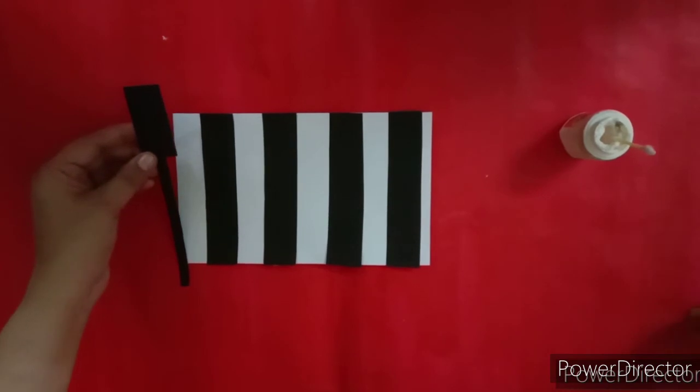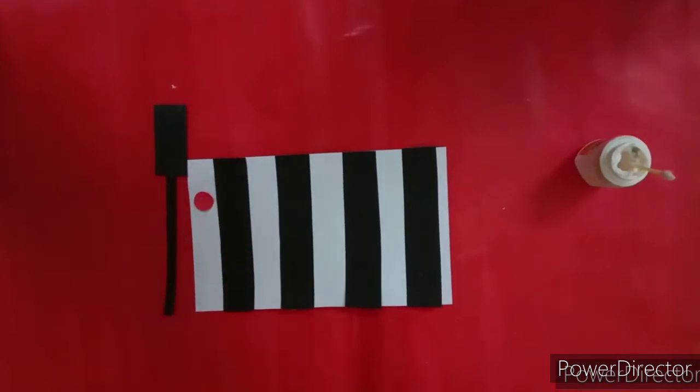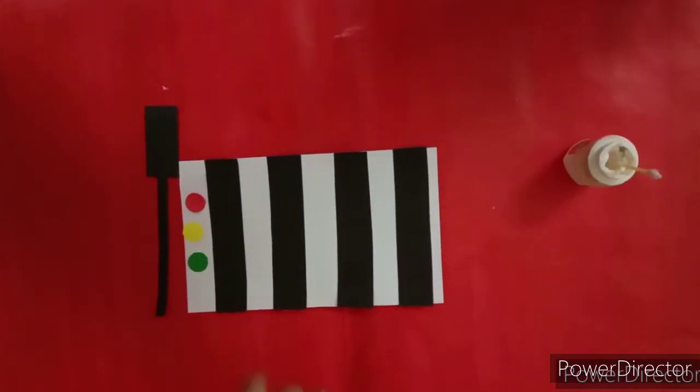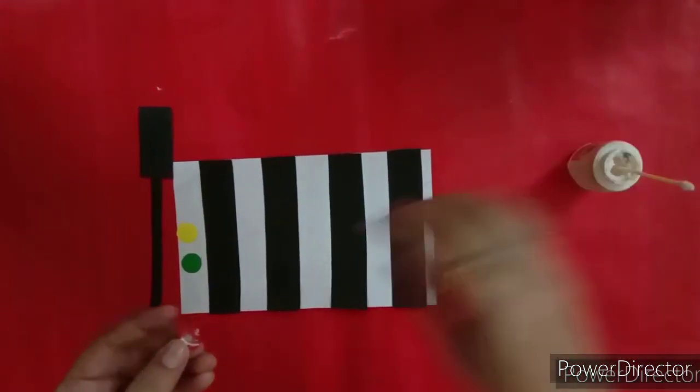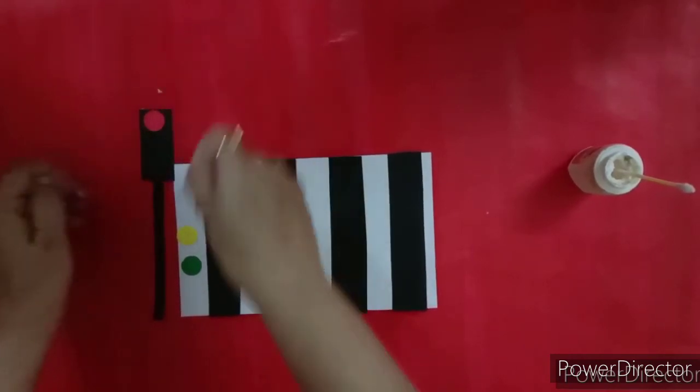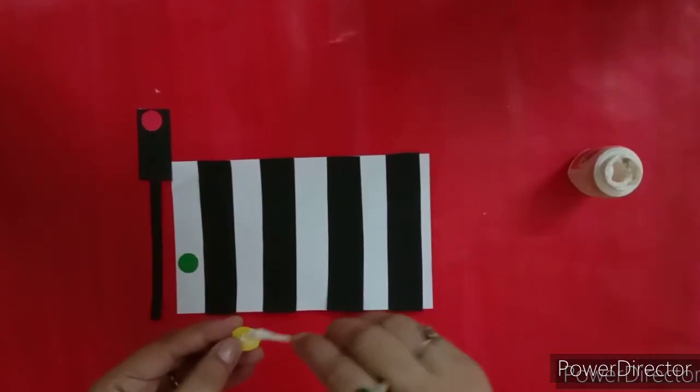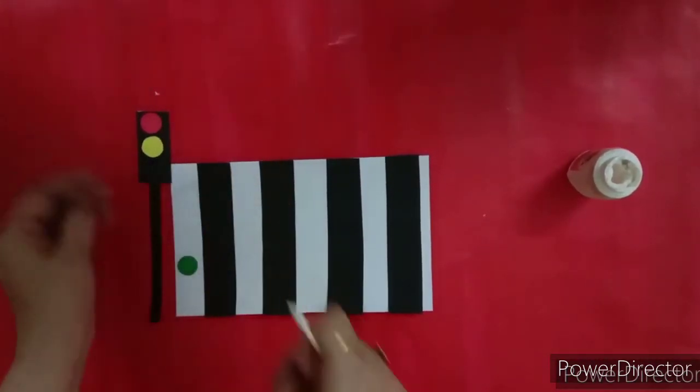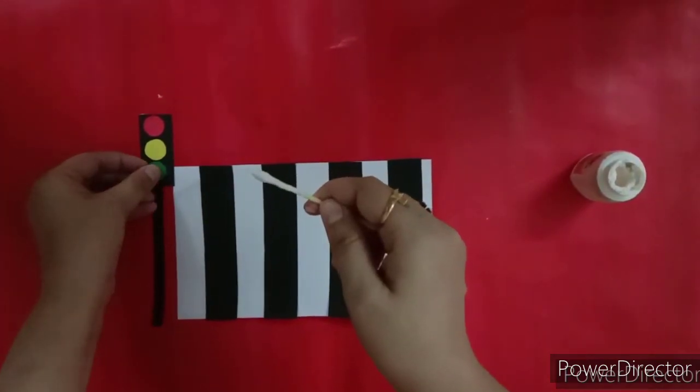Have you seen, children? Which color lights are there on the traffic signal? Red, yellow and green. Let's stick them on the traffic signal. The first is red color, then yellow color, and the last is green color.